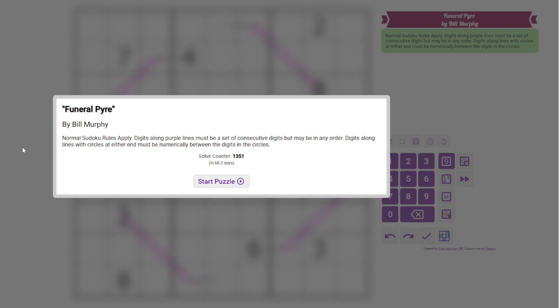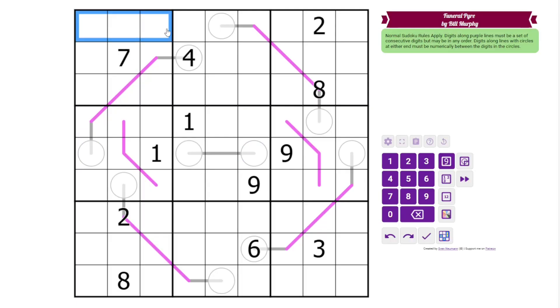Today I'm solving Funeral Pyre by Bill Murphy. This is a Renban and Between Lines Sudoku. We have normal Sudoku rules, one to nine in each row, all of them, and three by three box.